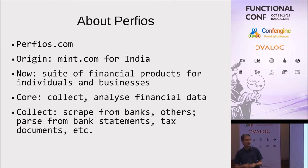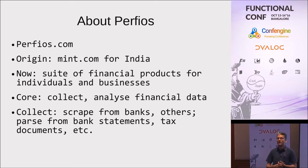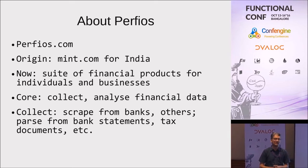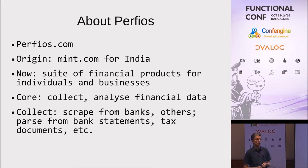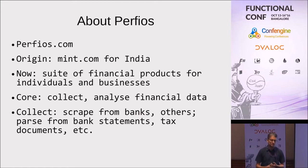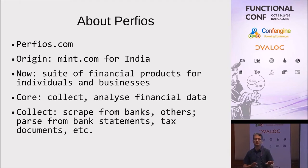The other part of data collection is from bank statements. Users can upload e-statements — PDFs and such — to Perfios's website, where they will be scraped, parsed, and the same information will be extracted as we would have from a bank website. There are also credit cards, mutual funds, stocks, and shares. Effectively it is collecting data by scraping or parsing a bank statement, analyzing it, and coming up with useful information.